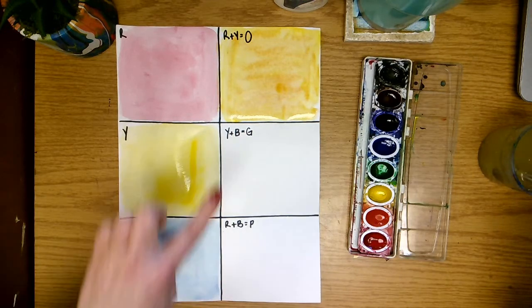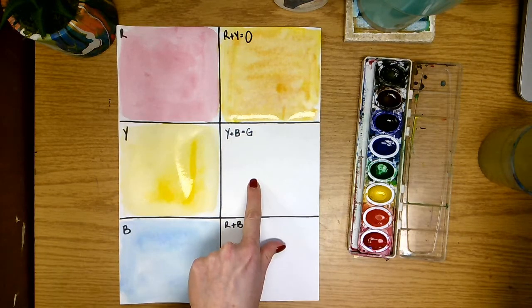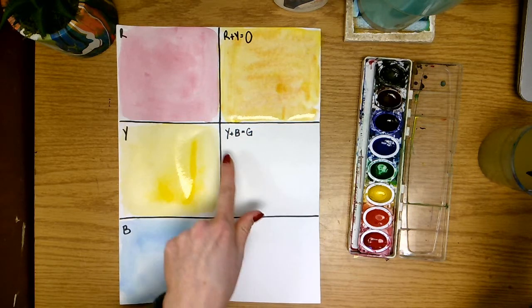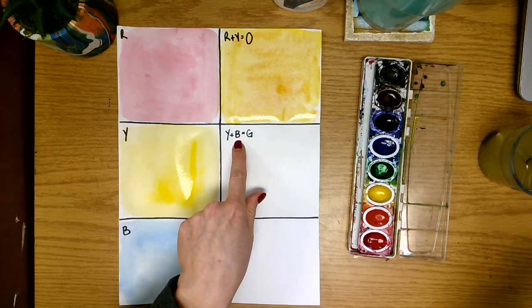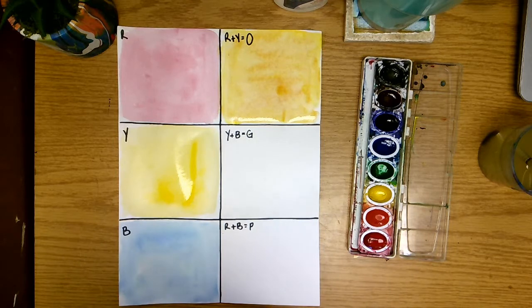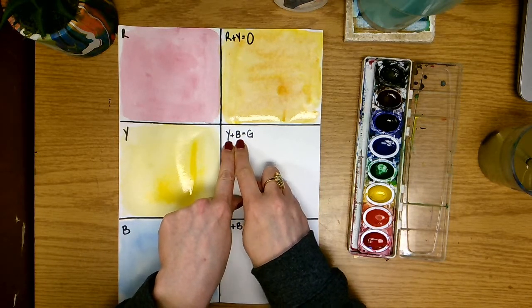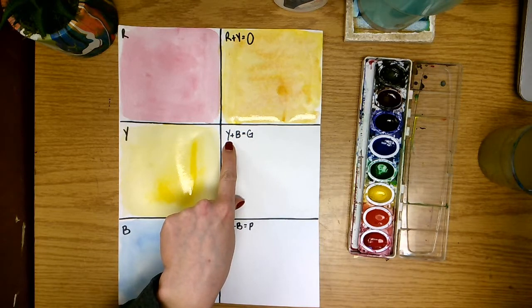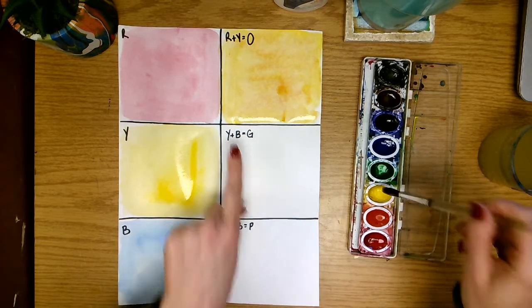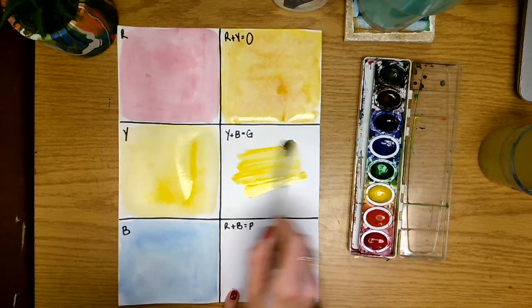Once we are done with that square we're going to move on to our next one. So in this one we're using yellow and blue. And again we're starting with the lightest of our colors. So between yellow and blue which one is the lightest? Yes, if you guessed yellow you are correct.